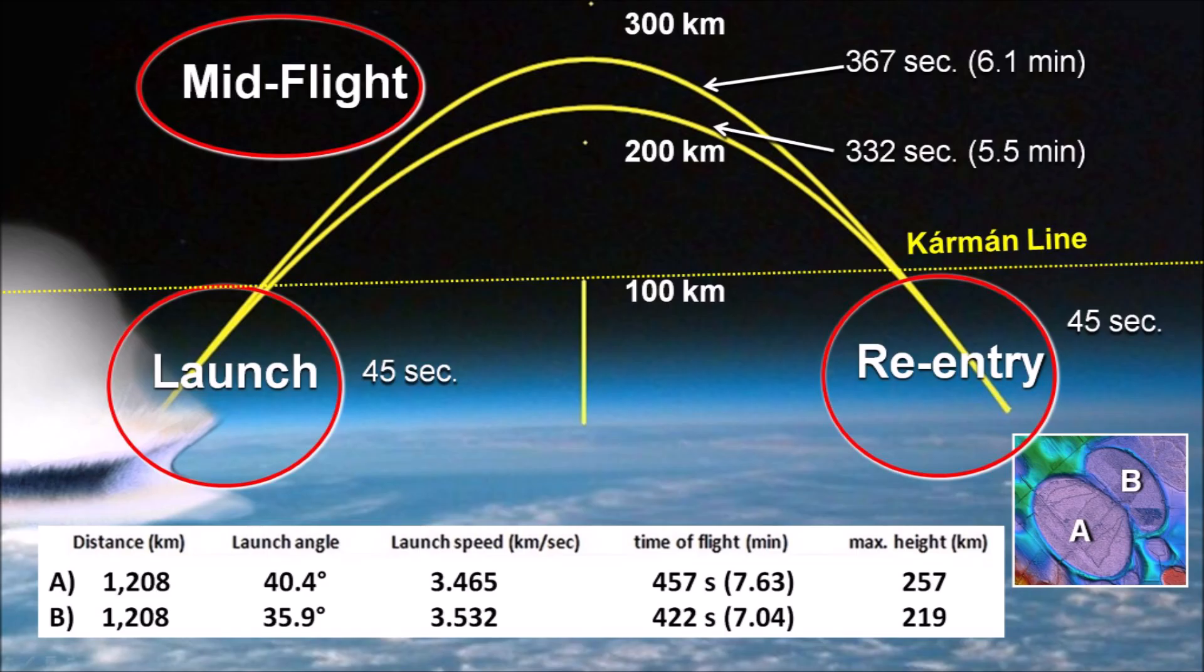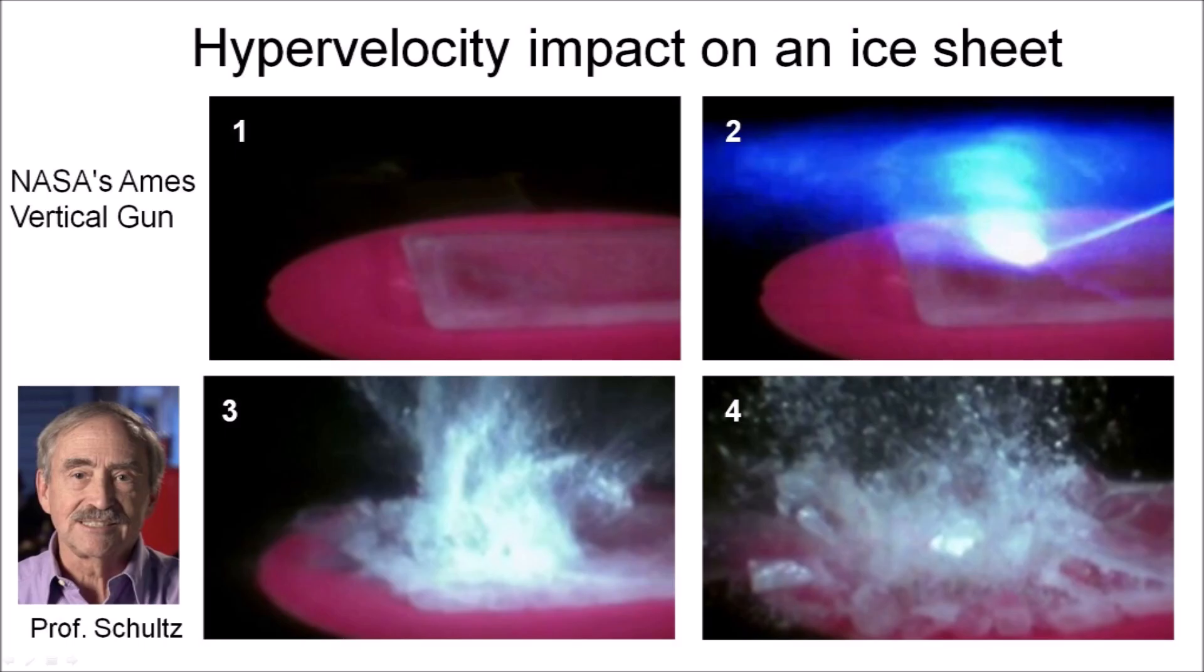Using NASA's Ames Vertical Gun, Professor Peter Schultz from Brown University has demonstrated many times that a hypervelocity impact on an ice sheet sends a shock wave that fractures the ice and the expansion of a vapor plume launches ice chunks of various sizes in ballistic trajectories. These experiments provide support for the idea that an extraterrestrial impact on the Laurentide ice sheet could have ejected pieces of ice in ballistic trajectories to create the Carolina Bays.